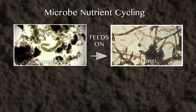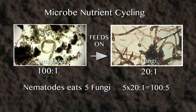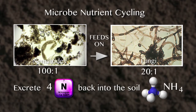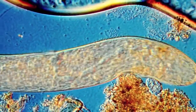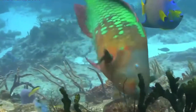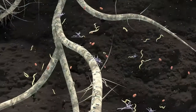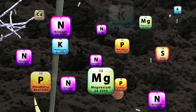Nematodes primarily prey upon fungi. Fungi are 20 carbons to 1 nitrogen; nematodes are upwards of 100 carbons to 1 nitrogen. Nematodes have to consume 5 fungi to maintain their carbon-nitrogen ratio of 100, which increases their nitrogen ratio to 5. They can retain only 1, and so 4 nitrogen are excreted into the soil as NH4 or ammonia. This occurs up and down the entire soil food web trophic chain. One organism is eaten by another, and another, and another. We understand this principle in the ocean — big fish eat little fish — and there is no difference in soil structure. What we are doing is releasing minerals in an organic and restructured form for plant nutrition.